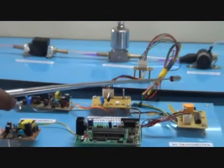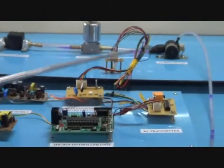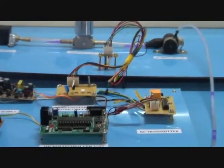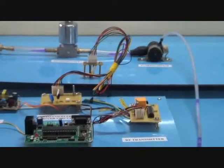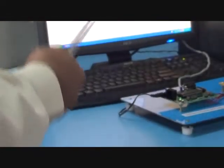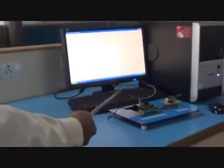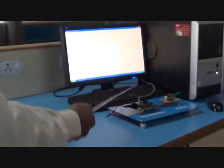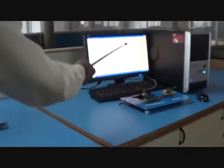This is the RF transmitter that we have used to report to the water board in case of any water theft. The RF receiver section is placed in the water board and it receives the signal from the RF transmitter and it is displayed on the computer using serial communication.